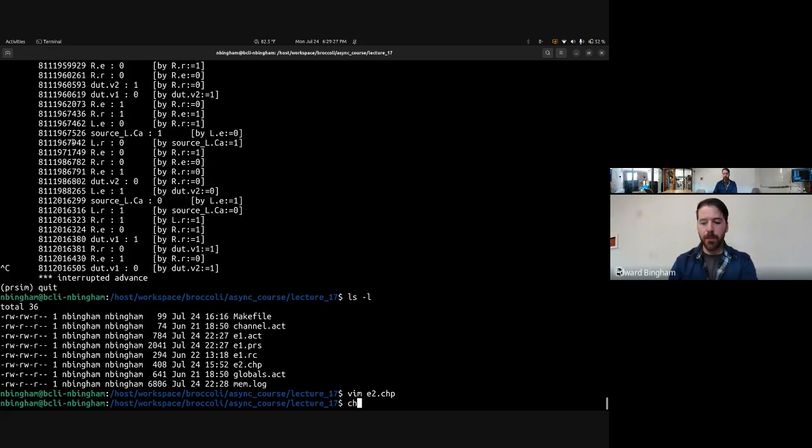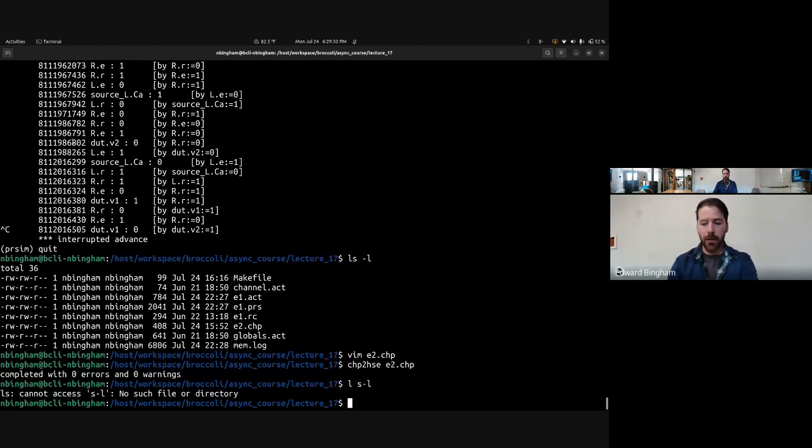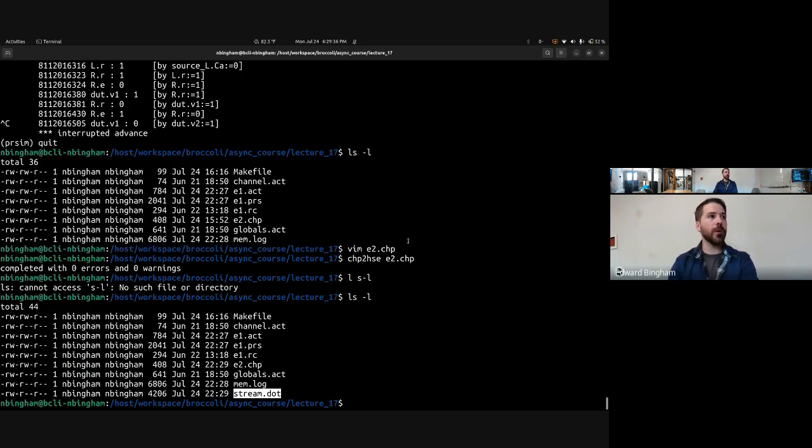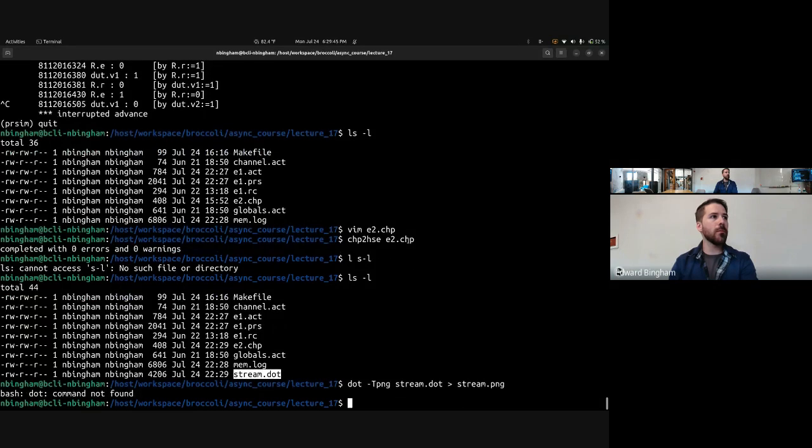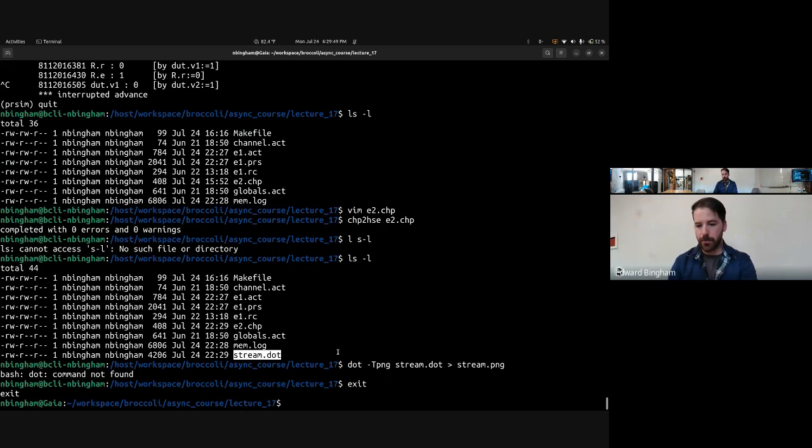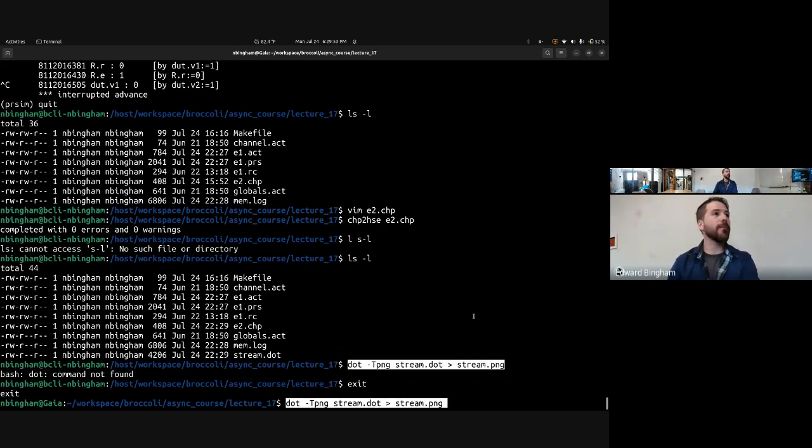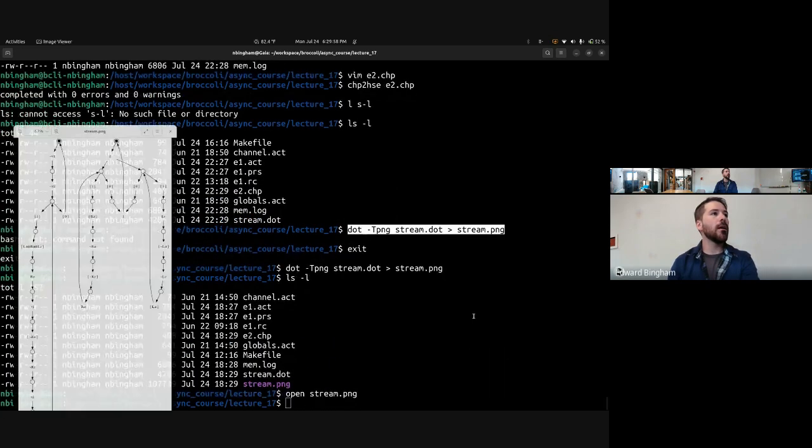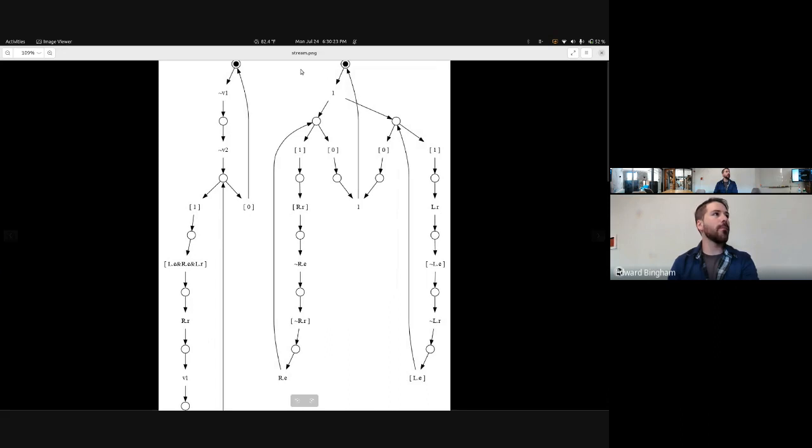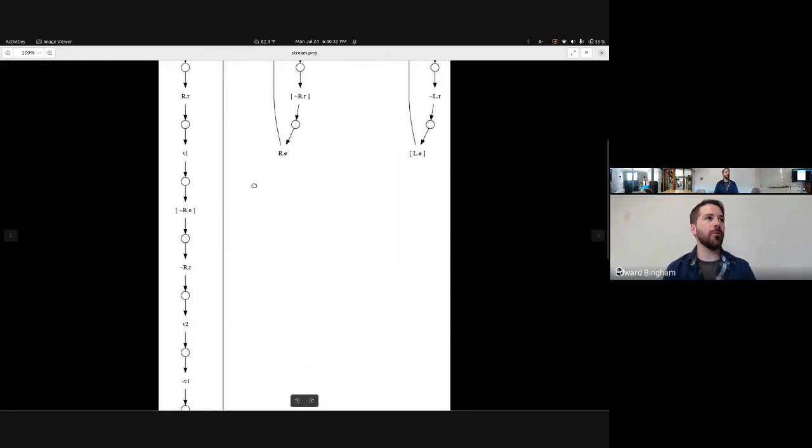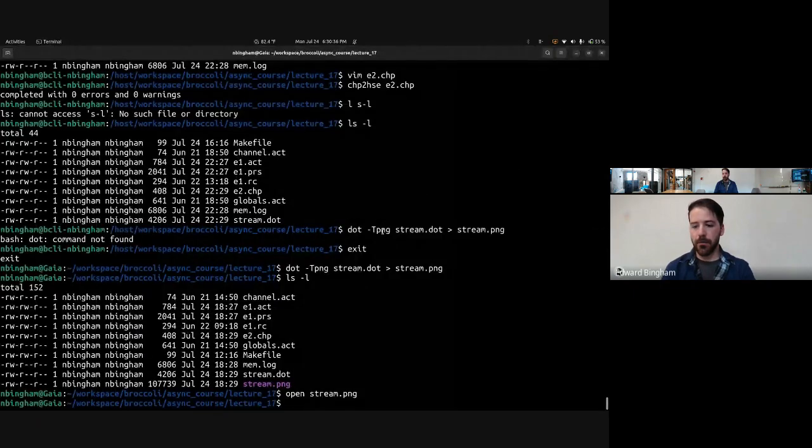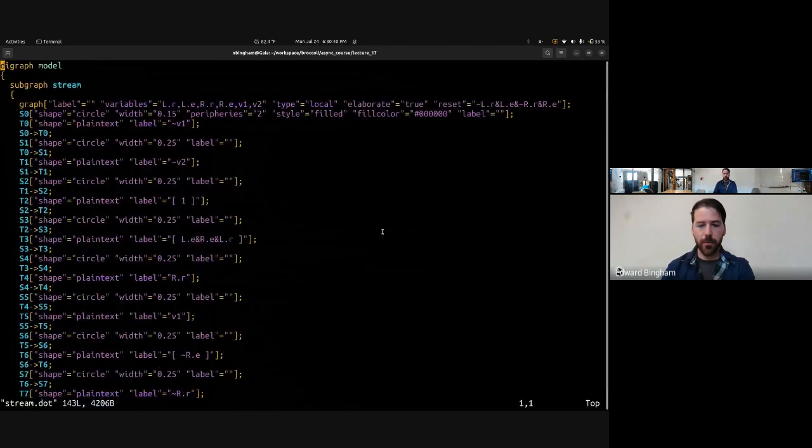And we can run this through CHP to HSE, and it generates a dot graph specification. So we can render this: dot dash T PNG stream dot dot, and then save that to stream dot PNG. We don't have dot in the broccoli command line interface. Note to self, fix that. And so this looks a lot like the HSE rendering that we were showing in the later versions. The later versions have gotten more sophisticated. So later versions removed these null guards, which you can't actually execute, and it cleans up the HSE in many different ways.